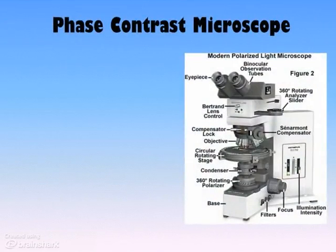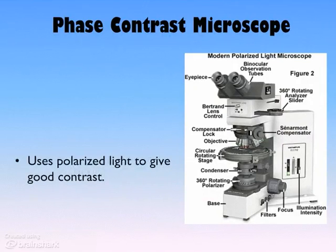Another type of light microscope is the phase contrast microscope. This is an interesting type of microscope, and instead of using regular light, it uses polarized light, and this allows it to get a lot better contrast.